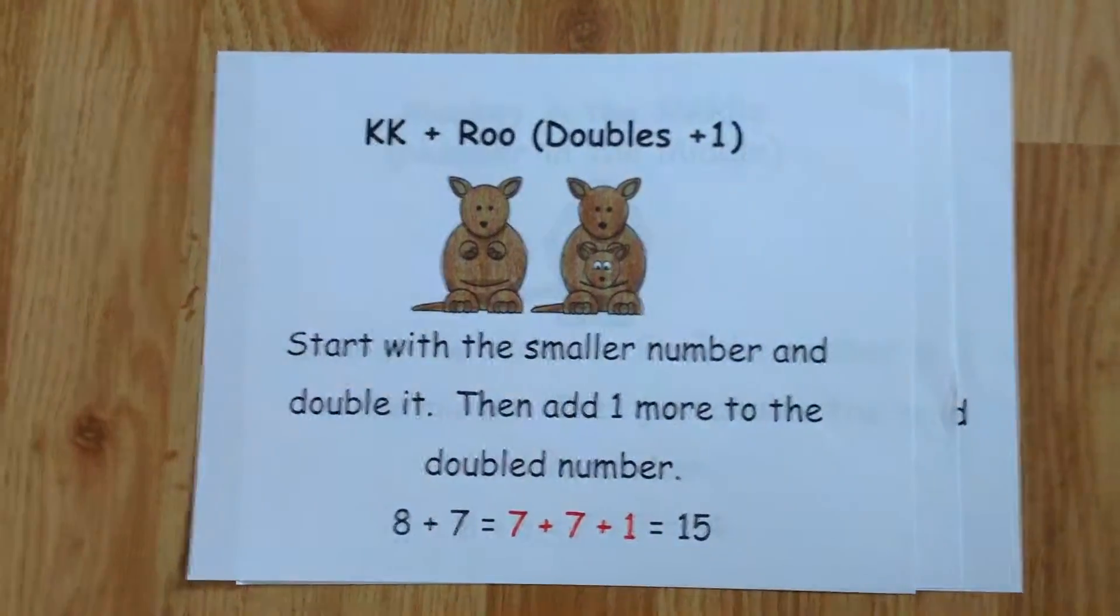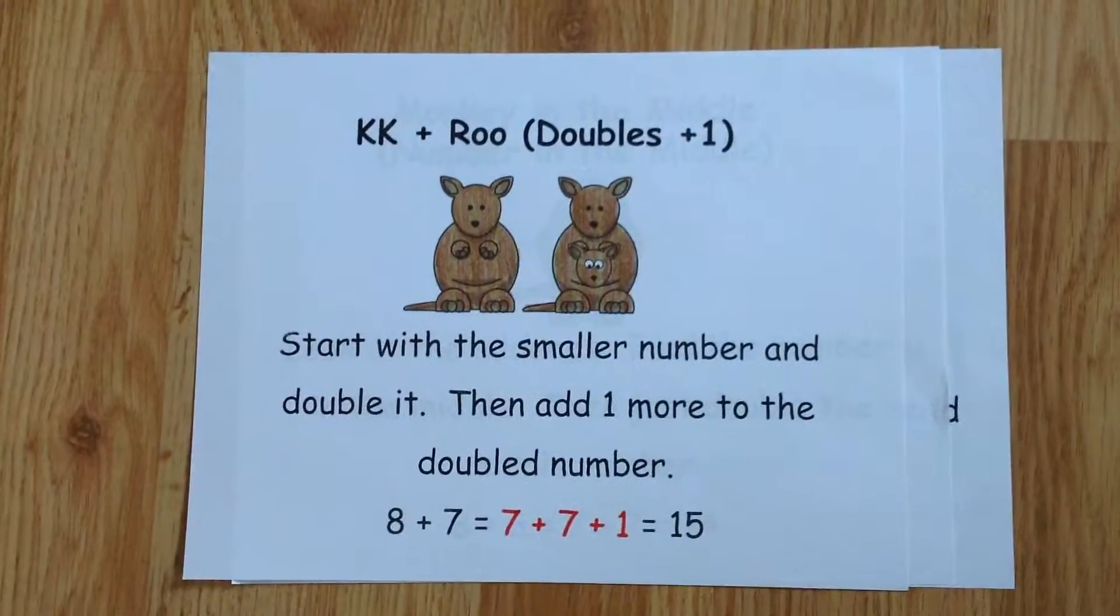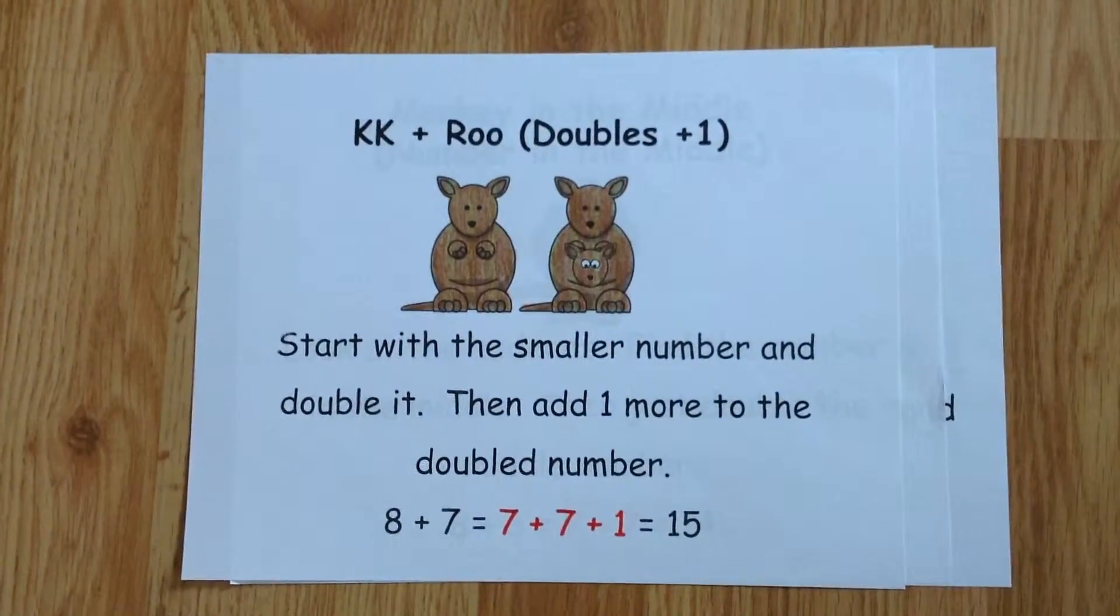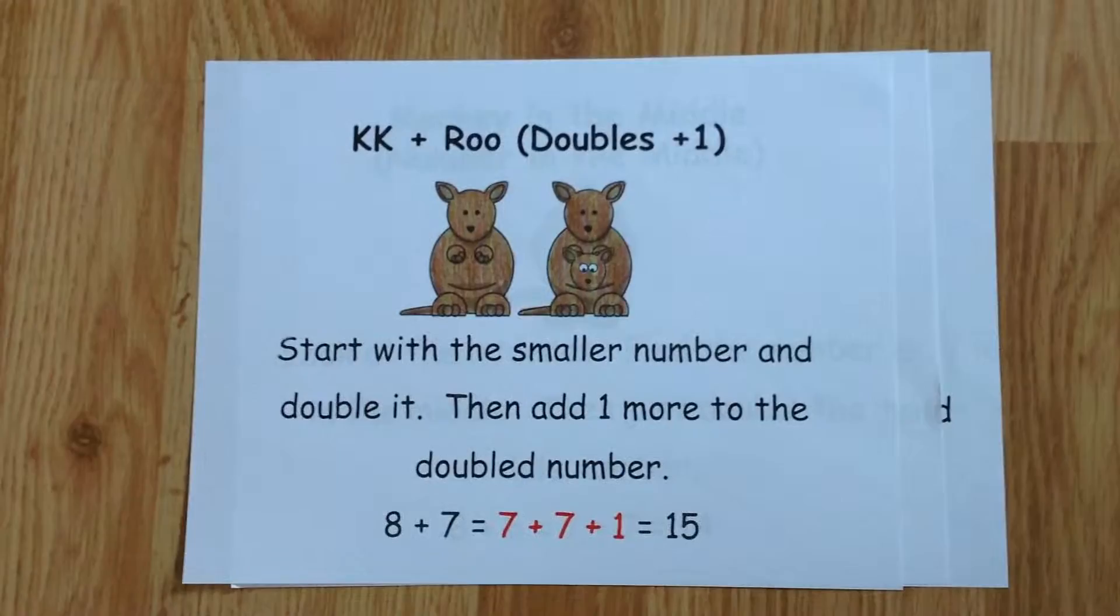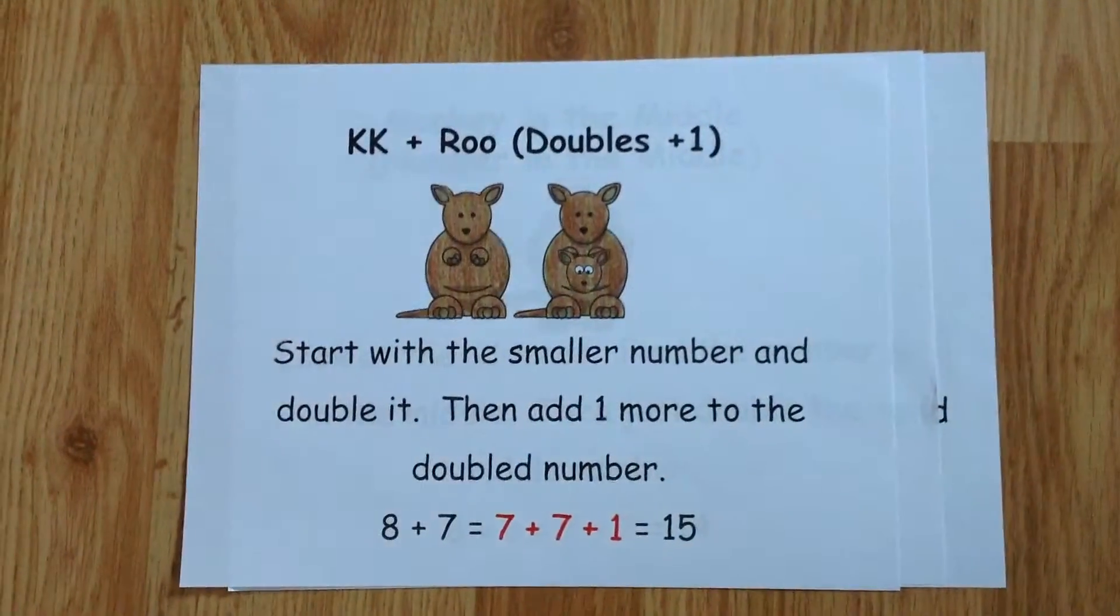The first strategy is called KK plus Roo, or doubles plus one. Notice the two addends are right next to each other. Just double the smaller number and add one more.